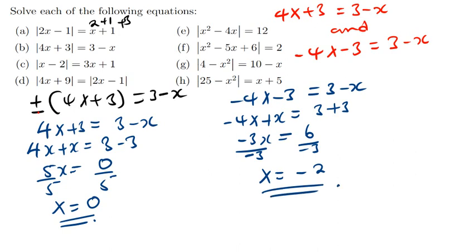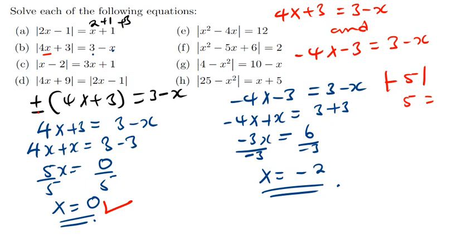Taking these solutions back to check: if I plug in x=0 into 3 minus x, I get 3 — that's okay. If I plug in x=negative 2 into the modulus side: 4 times negative 2 plus 3 is negative 8 plus 3, which is negative 5 — but in the modulus it comes out as positive 5. On the other side: 3 minus negative 2 equals 5. So both 0 and negative 2 are part of the solution.